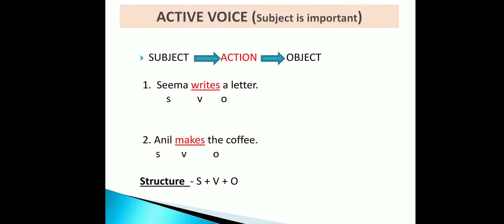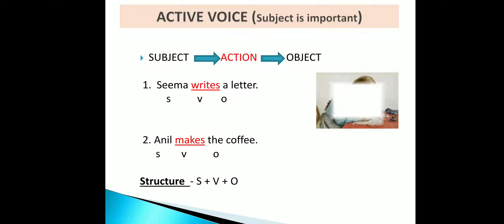What is the meaning of active voice? In active voice, the subject is important — the subject is the performer and the object is the receiver. That means the subject is doing the action on the object. For example, 'Sima writes a letter.' Here, Sima is performing the action of writing a letter. Sima is the subject and 'a letter' is the object.